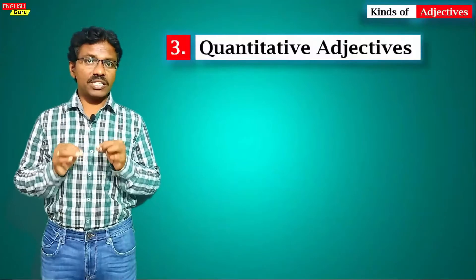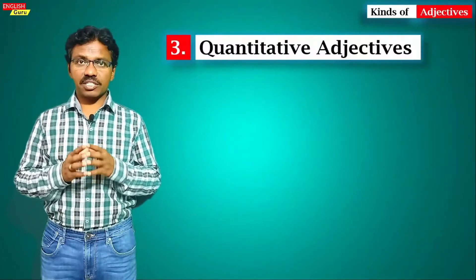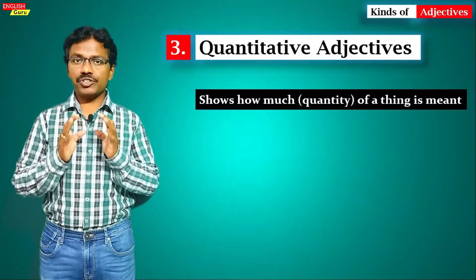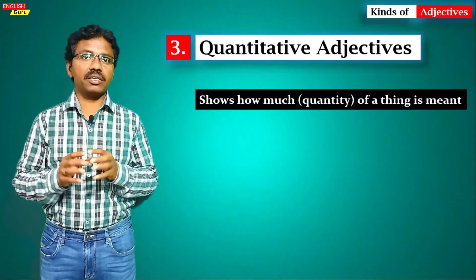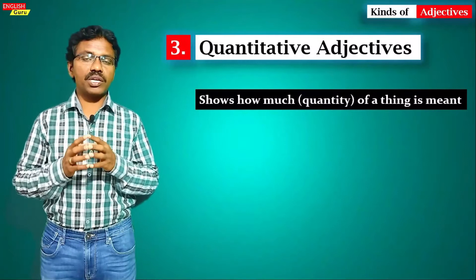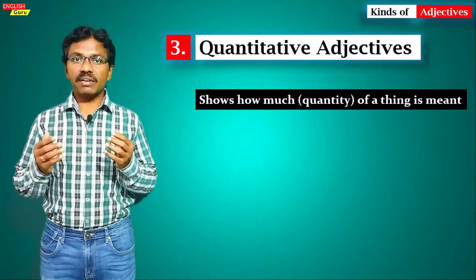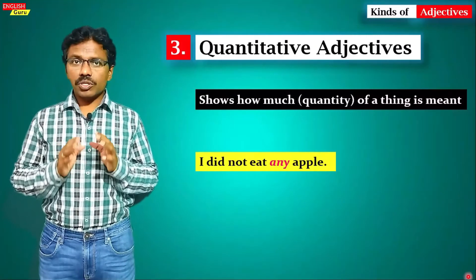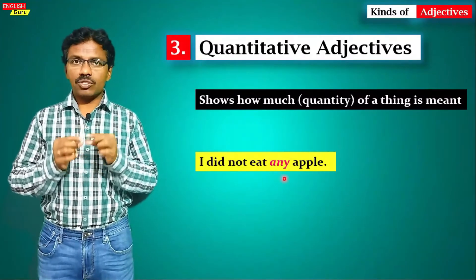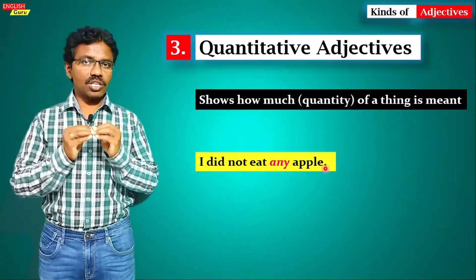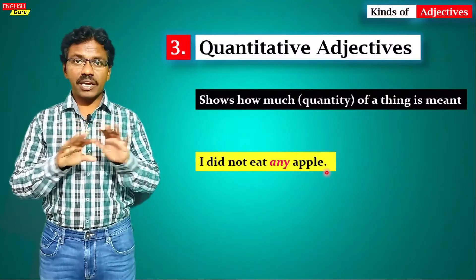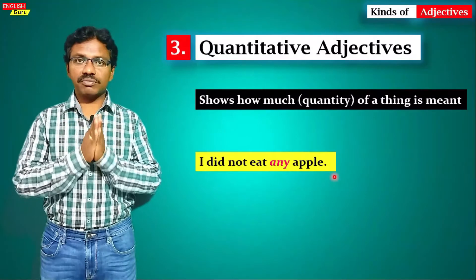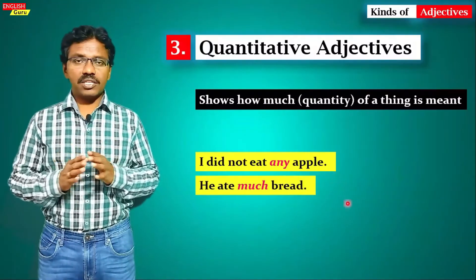The third type is quantitative adjectives. Quantitative adjectives show how much quantity of a thing is meant. For example, in a sentence like 'I did not eat any apple,' the word 'any' is talking about the quantity — so 'any' is a quantitative adjective.